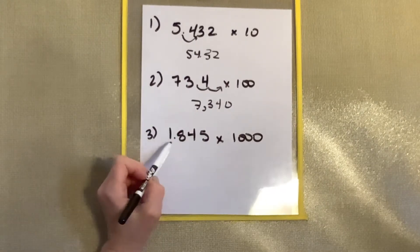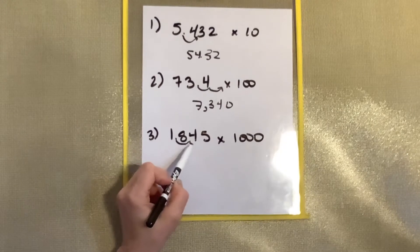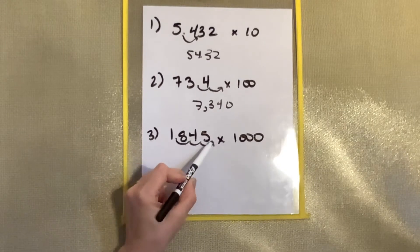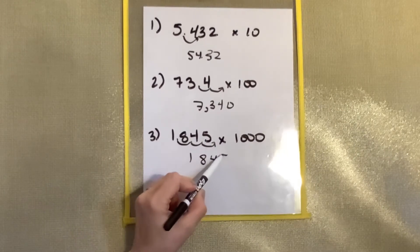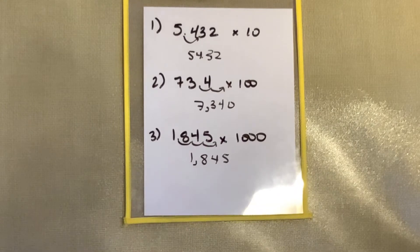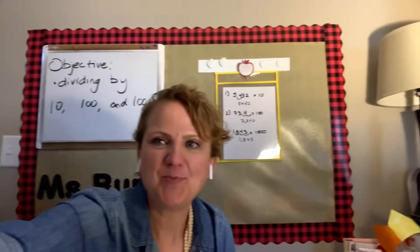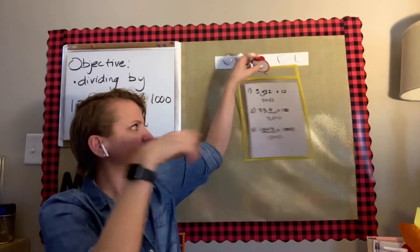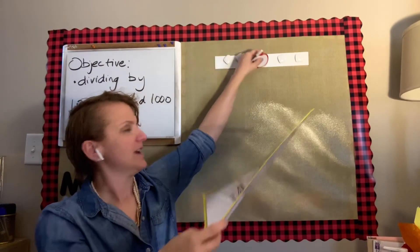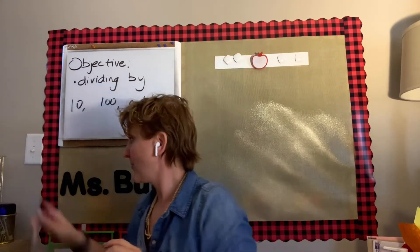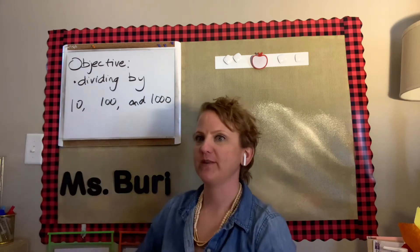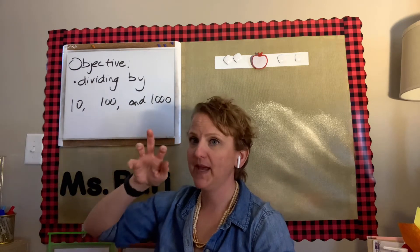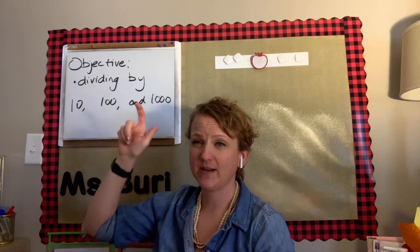And here, one, two, three zeros means one, two, three spaces to the right, and we end up with 1,845. Hopefully that is coming back to you pretty easily. It's going to build on what we're working on for today.